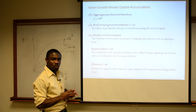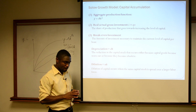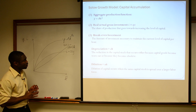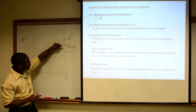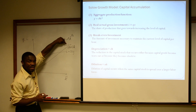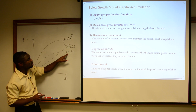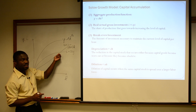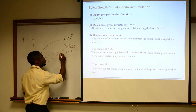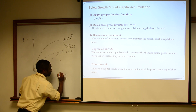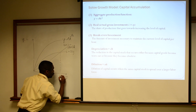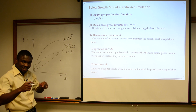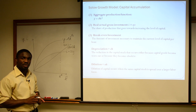Let's now think about equilibrium. Our equilibrium is the point where our break-even investment exactly equals our actual investment — it's going to be where these two curves intersect. We call that K star, which Solow described as the steady state capital.